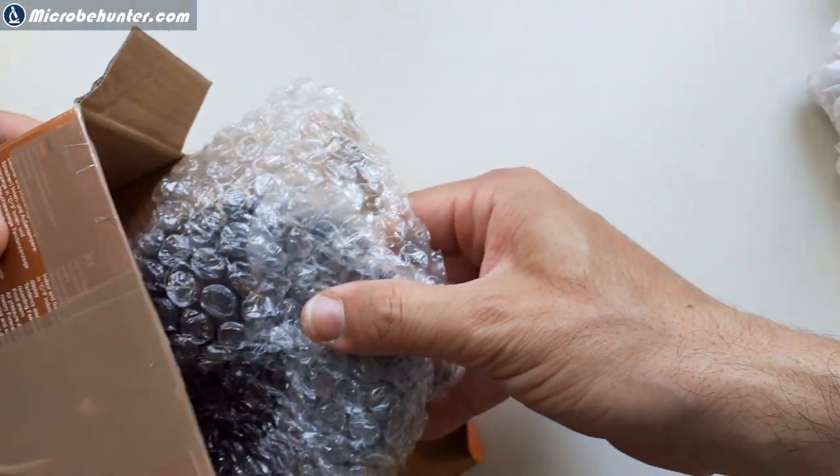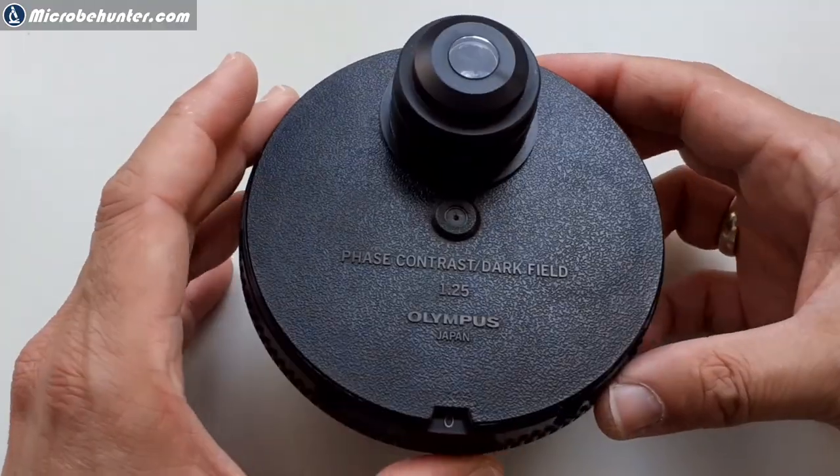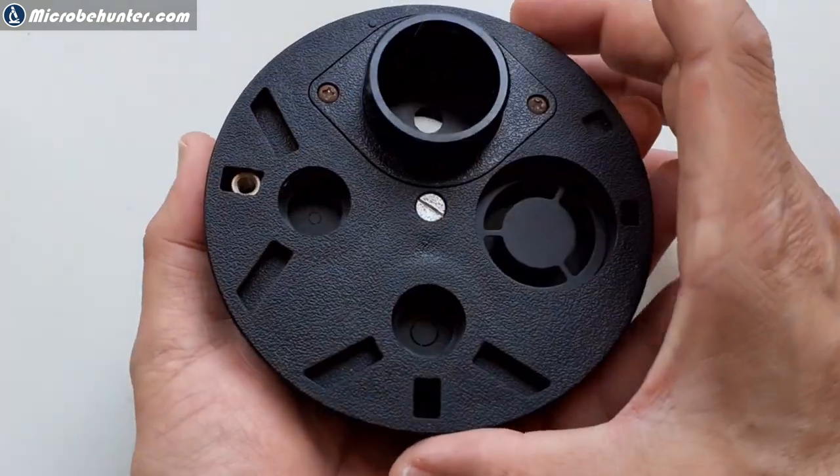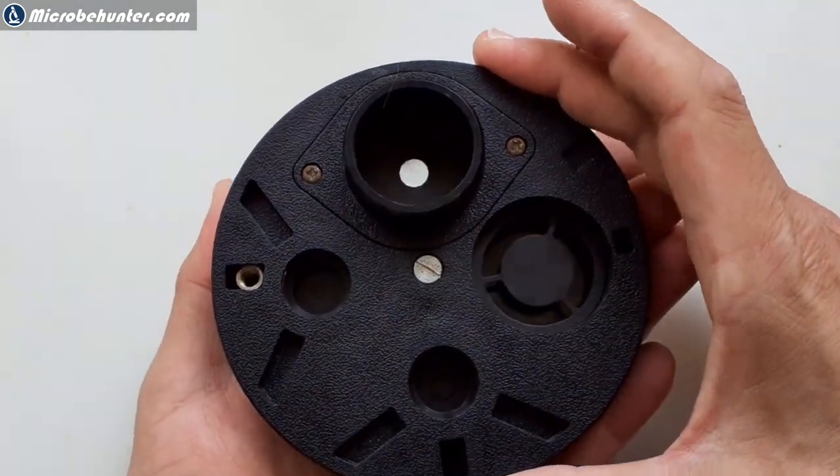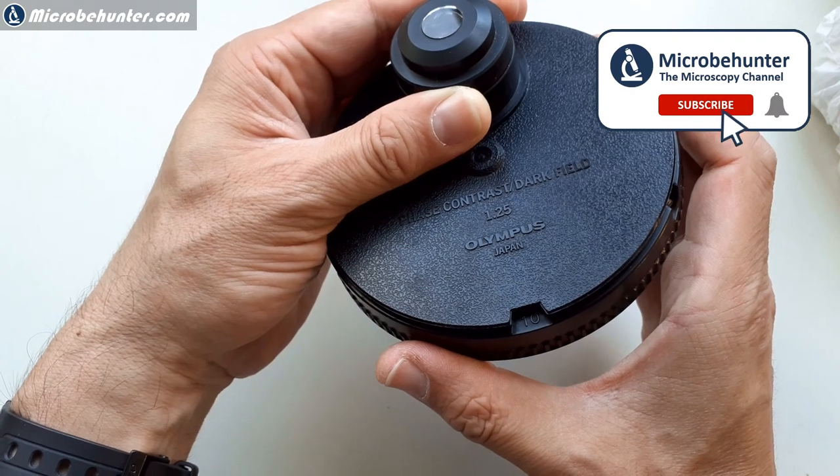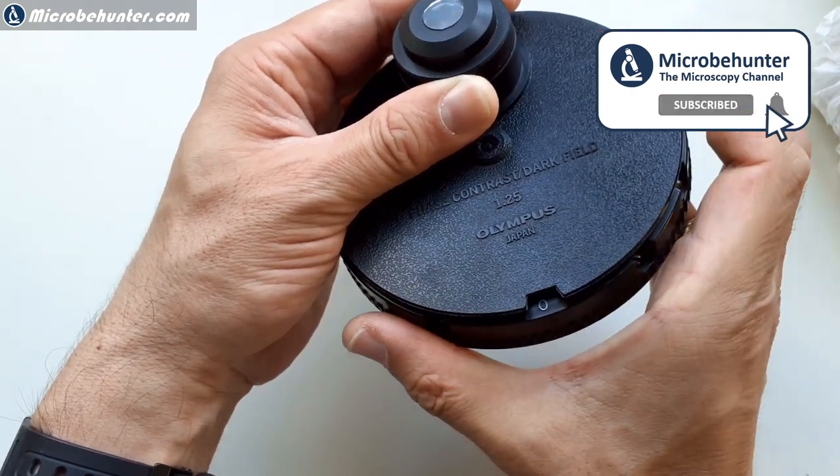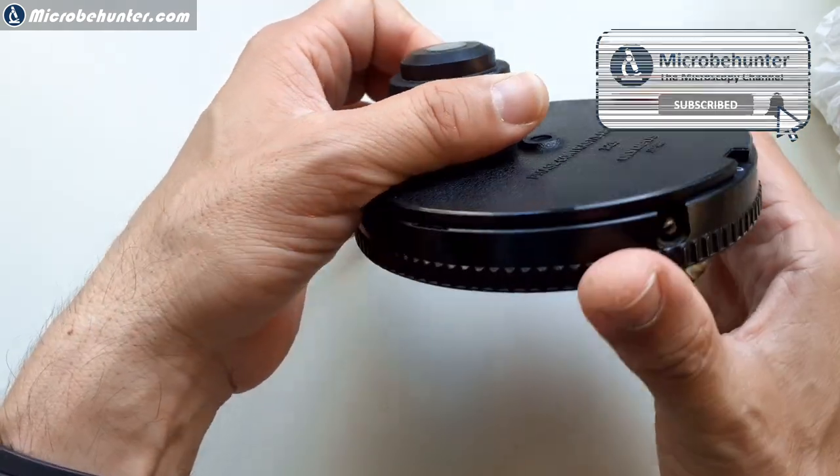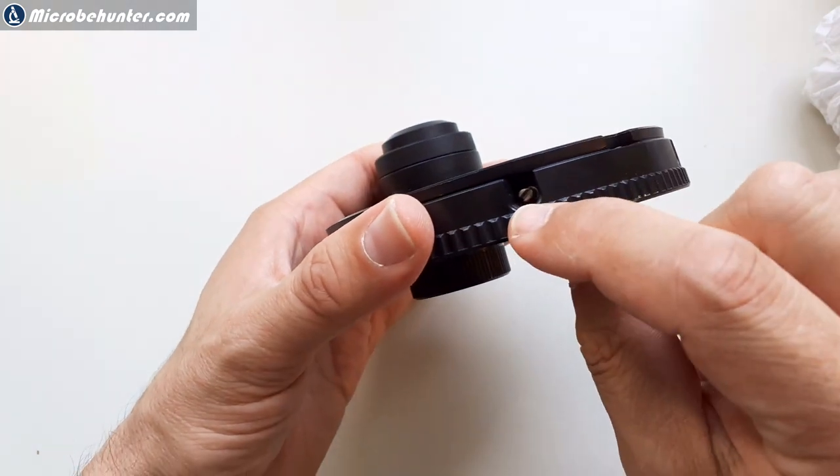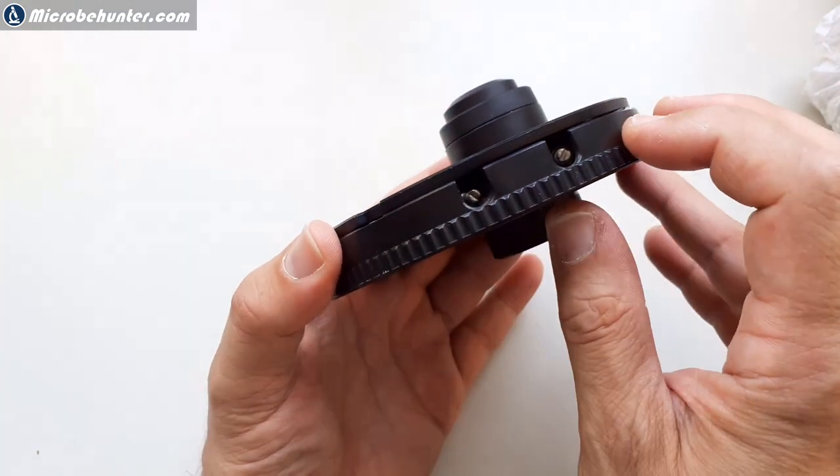I'm going to start with unpacking and connecting the phase contrast condenser to my microscope. The condenser is an original Olympus condenser, a little bit difficult to find these days because it's not manufactured anymore. To my surprise, made fully of plastic. My other condenser, which was older, was actually fully made of metal, but it doesn't matter because it actually works quite well.